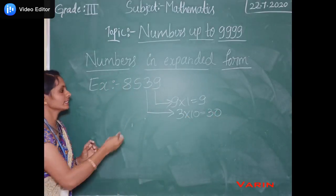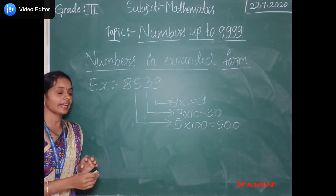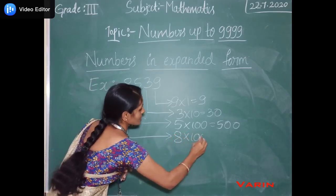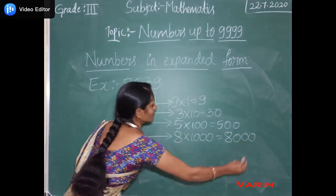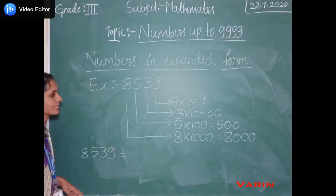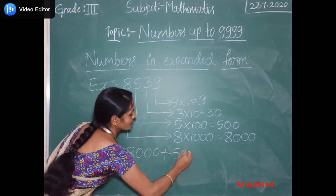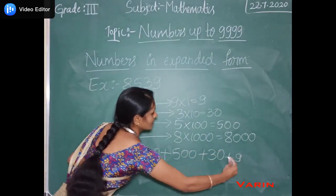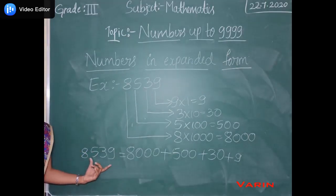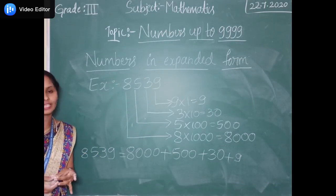5 is present in the hundreds place, so 5 into 100 it becomes 500. And 8 is present in the thousands place, so 8 into 1000 it becomes 8000. Finally, the expanded form of this number is the sum of the place values: 8000 plus 500 plus 30 plus 9. This is the expanded form of the number 8539. Writing numbers in expanded form means it is the sum of the place values.